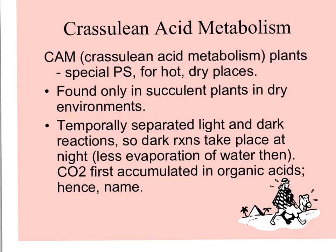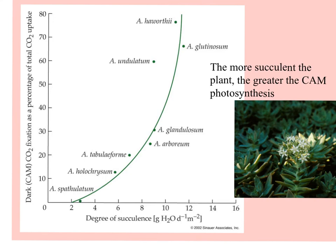In CAM, light and dark reactions are separated in time — the dark reactions take place at night when there's less evaporation of water. The stomata are open at night, carbon dioxide enters the plant, and sugars are made. The carbon dioxide accumulates in organic acids — the crassulacean acids — and the more succulent the plant, the greater the amount of CAM photosynthesis. The most succulent plants have the greatest dark carbon dioxide fixation as a percentage of total CO2 uptake.